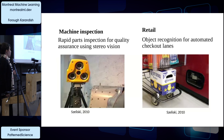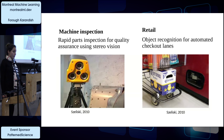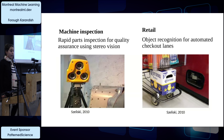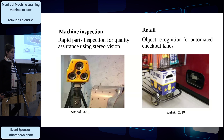They also use computer vision for machine inspection, using 3D X-ray to find defects on machines or products. In retail, they use object recognition for automatic checkout lanes.